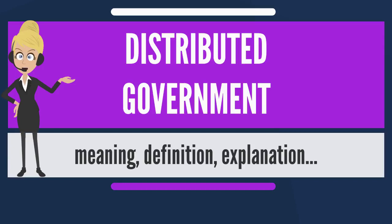The typical division creates an executive branch that executes and enforces the law as led by a head of state, typically a president; a legislative branch that enacts, amends, or repeals laws as led by a unicameral or bicameral legislature; and a judiciary branch that interprets and applies the law as led by a Supreme Court.